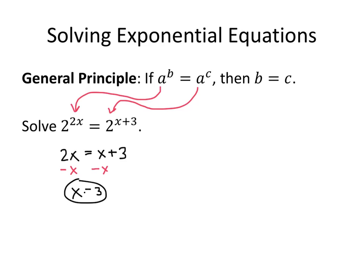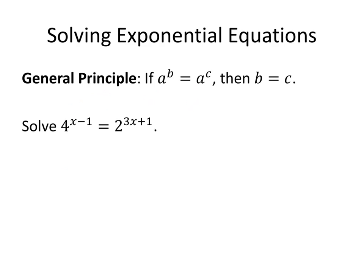So that wasn't too bad. Let's try another one. This time we have 4 to the x minus 1 equals 2 to the 3x plus 1. At first glance it looks like we're not in the situation we're looking for — we don't have the same base on both sides. But we can make the bases the same by realizing that 4 is simply 2 squared. Then all we have to do is simplify the left-hand side. We have a power raised to a power, so we multiply those exponents. That gives us 2 to the 2x minus 2 equals 2 to the 3x plus 1.